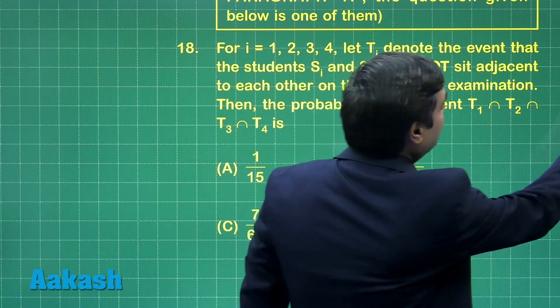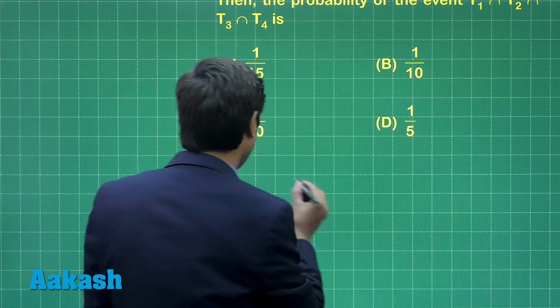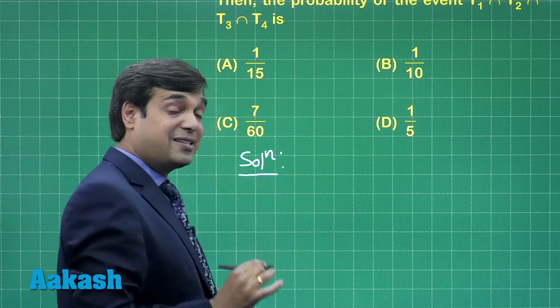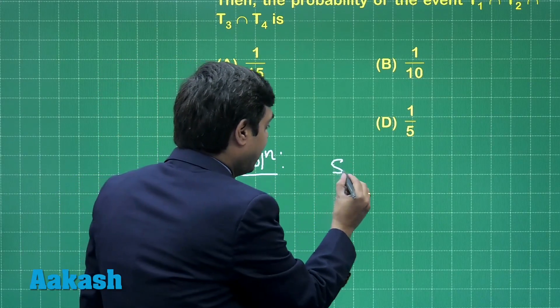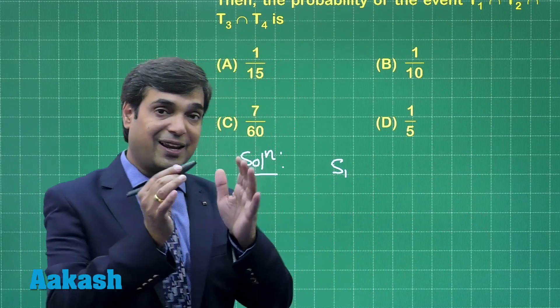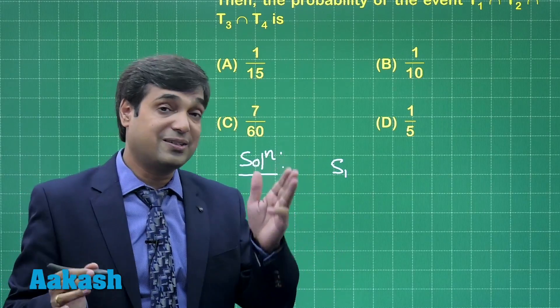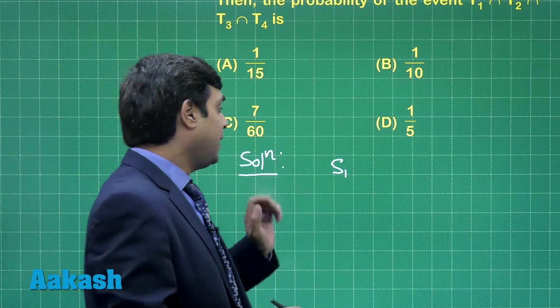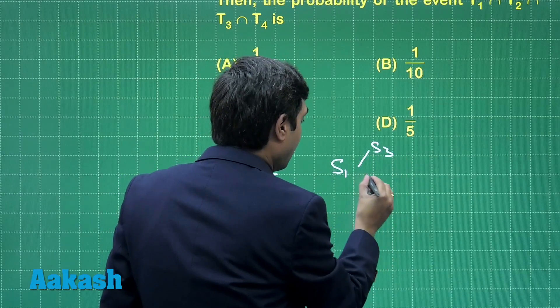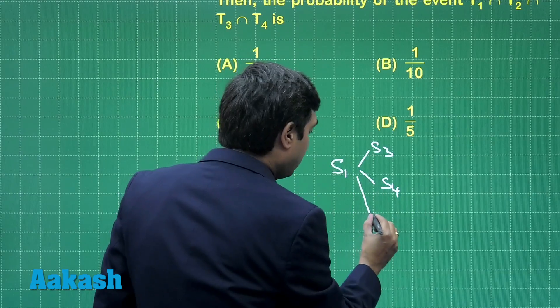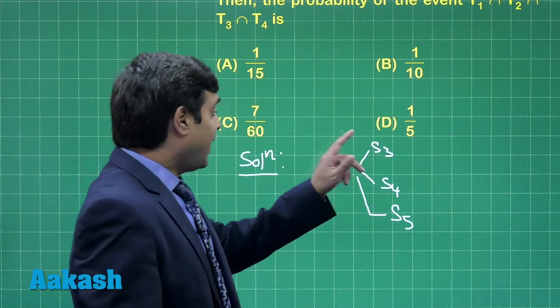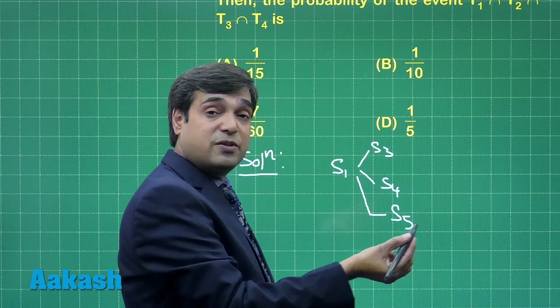Here we have to consider the cases, we have to make the analysis of all possible cases. It says, for example, S1 sits here. Next to S1, S2 is not possible when we are taking T1 intersection T2 intersection T3 intersection T4 events. Meaning after S1, possibility is for S3 or S4 or S5. With S3, next S2 and S4 not possible.